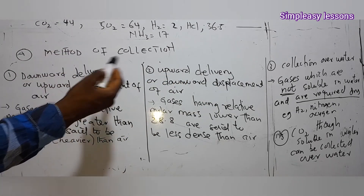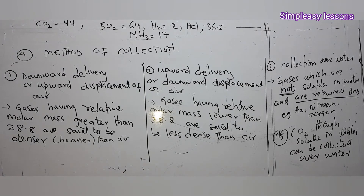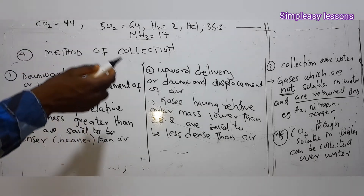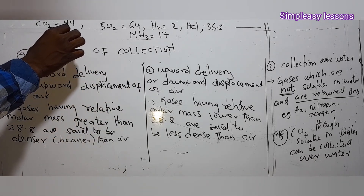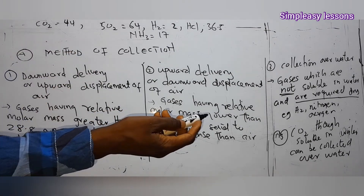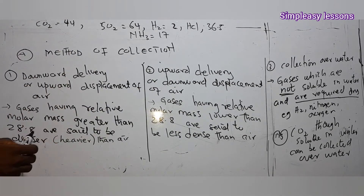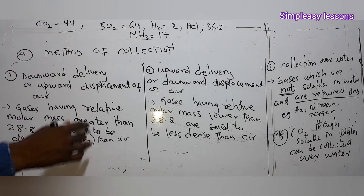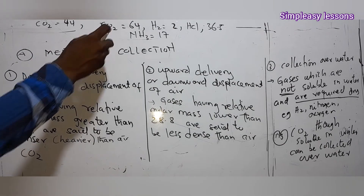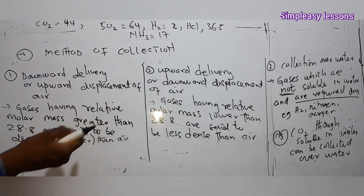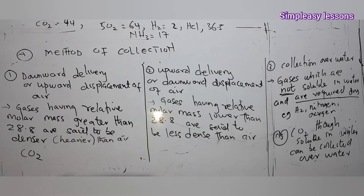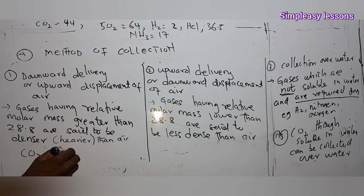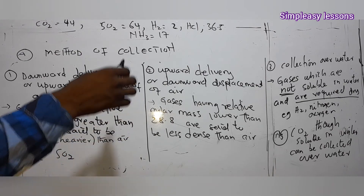Let's look at some examples. Carbon dioxide, CO₂, has a molar mass of 44. Since 44 is greater than 28.8, it is heavy, so it moves downward — downward delivery. What about SO₂? Its molar mass is 64, and 64 is greater than 28.8, so it is also heavy and moves downward — downward delivery.